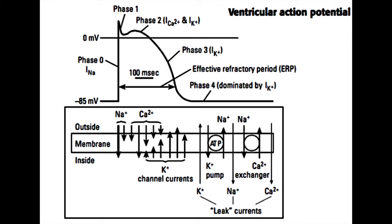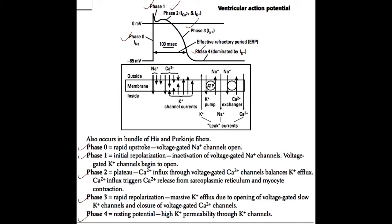The ventricular muscle action potential is shown here. This tracing is recorded by patch clamping, or by taking a measurement of the actual voltage inside the cell compared to the outside. As you can see, phase four, which is the resting membrane potential, is approximately negative 85 millivolts. After the cell is activated, most likely by a neighboring cell, the cell will undergo its action potential. The first phase is phase zero, or the upstroke of the action potential.